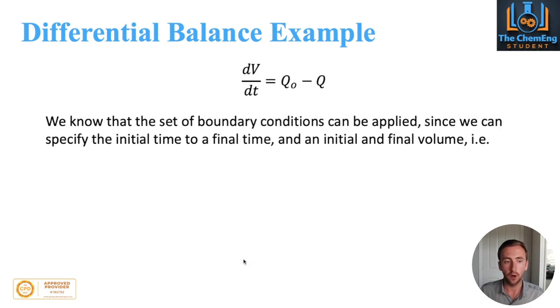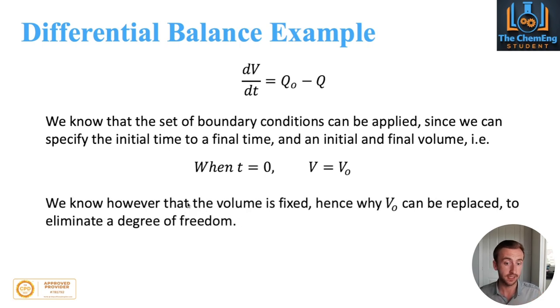From here we can set our boundary conditions that can be applied. Since we can specify the initial time and final time, the initial and final volume can be determined by when t equals 0, V must equal V₀. That makes sense because the volume hasn't actually changed. But if our volume is fixed, then V₀ would actually become V which would eliminate a degree of freedom. If we have varying amounts of volume within the system, this last part would not apply. Therefore if we have varying levels within the reactor, we would have V and V₀.